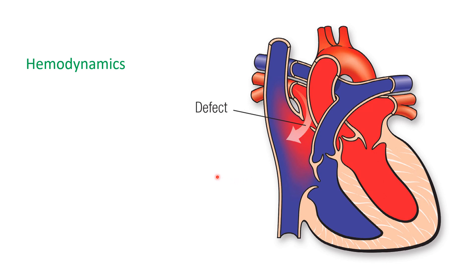Let us understand the hemodynamics of atrial septal defect. Oxygenated blood from the left atrium comes through the atrial septal defect into the right atrium. The right atrium also receives blood from the superior and inferior vena cava, so a large amount of blood accumulates in the right atrium. Through the tricuspid valve it enters the right ventricle, then through the pulmonary valve it goes to the pulmonary circulation, gets oxygenated, and returns to the left atrium. From the left atrium through the mitral valve it enters the left ventricle and goes to the systemic circulation. Some part of the left atrial blood then again goes back to the right atrium as oxygenated blood.